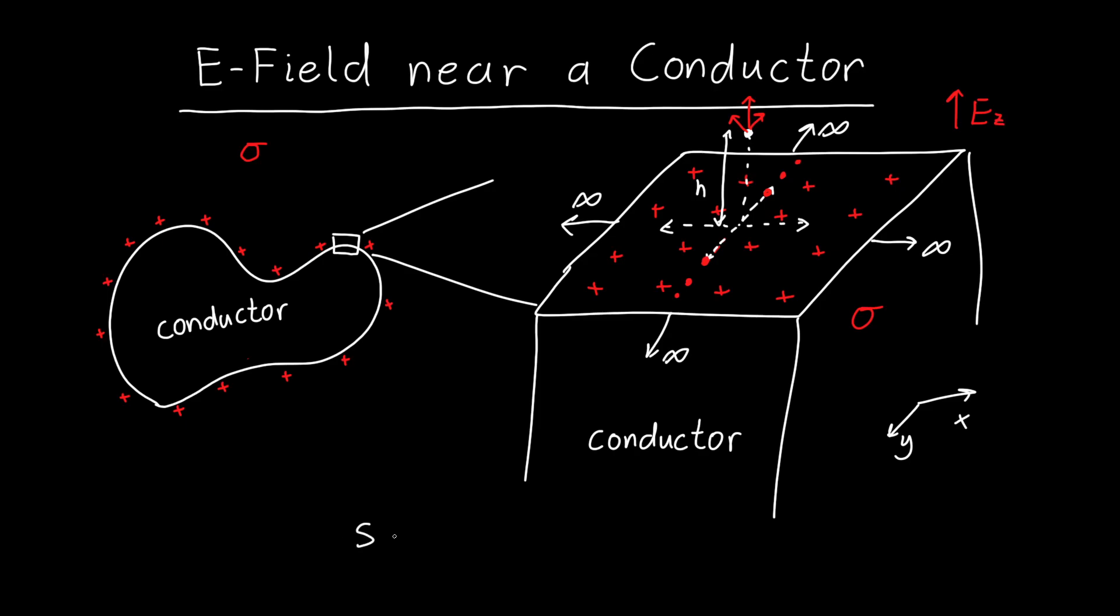And because this problem has tons of symmetry, so it's an infinite plane, it has a lot of symmetry, this means we can use Gauss's law to figure out what the electric field is just above the conductor. So to use Gauss's law we have to figure out what Gaussian surface we want to use. And so let's just redraw this plane real quick.